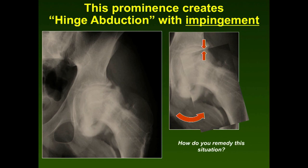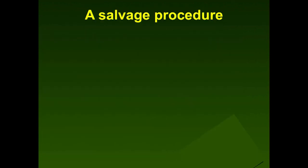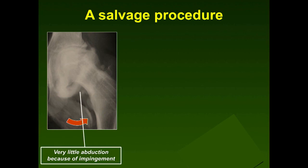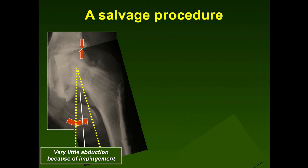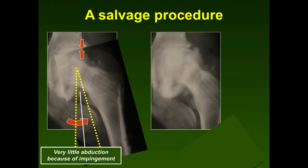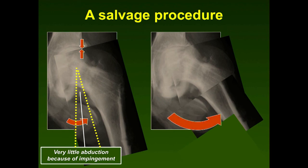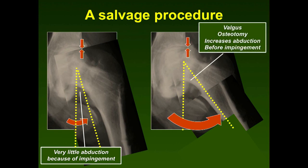To remedy hinge abduction from AVN sequelae, you can perform a valgus osteotomy — taking out a wedge changes the mechanics so the patient has more abduction range before impingement occurs. This patient's abduction improved significantly. He will likely eventually need a total hip replacement as the joint wears out, but valgus osteotomy is an effective salvage procedure to increase functional abduction range and reduce impingement pain.